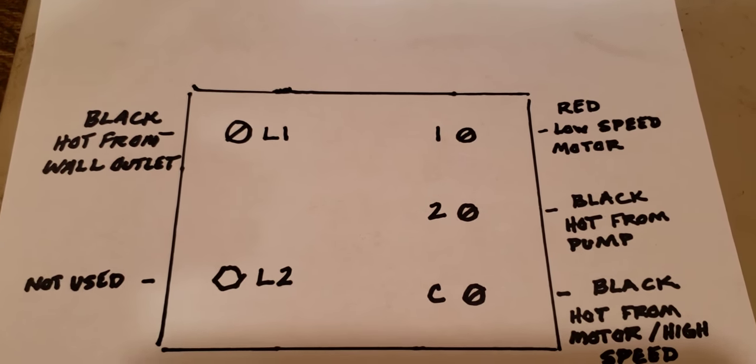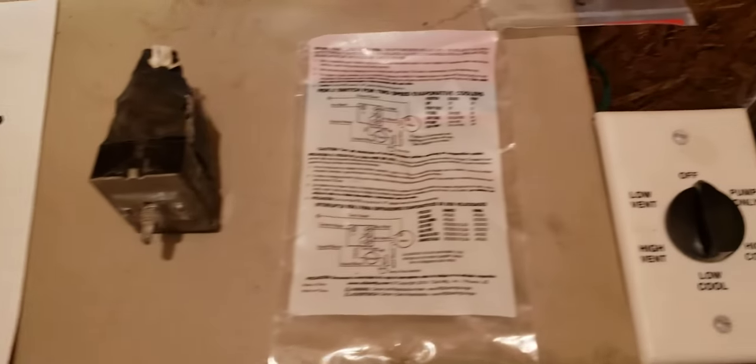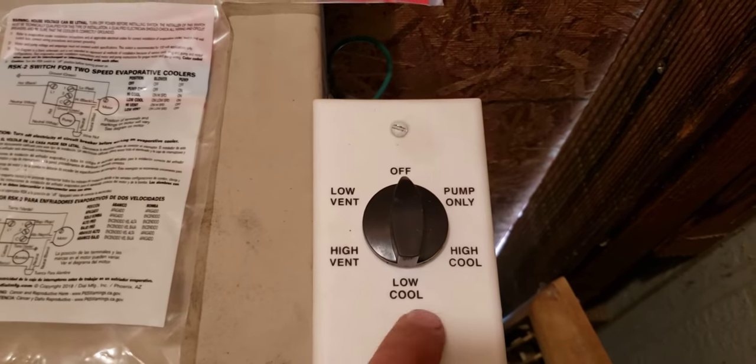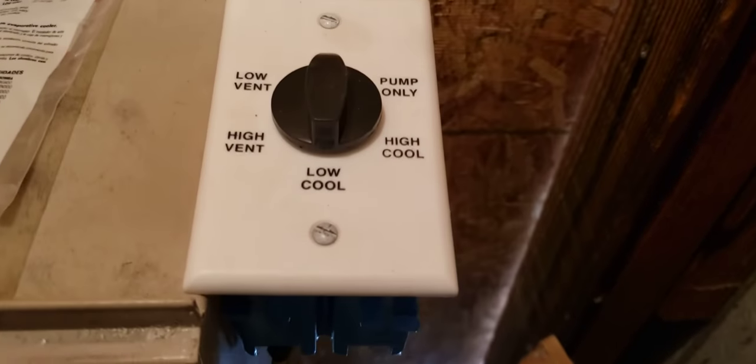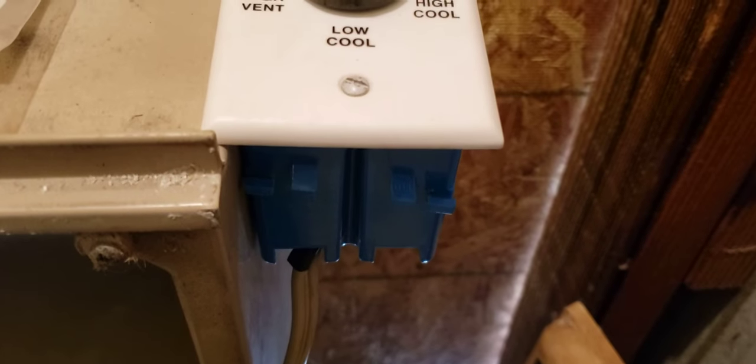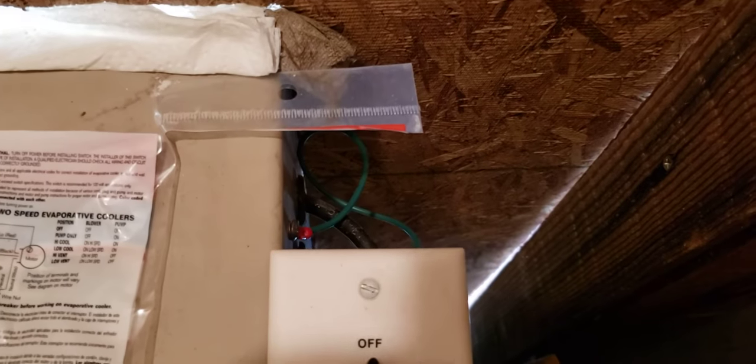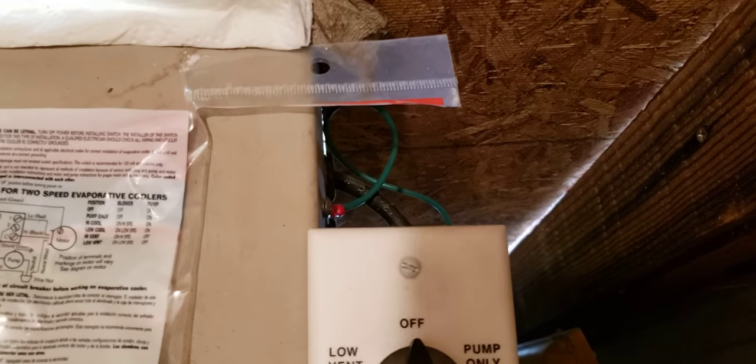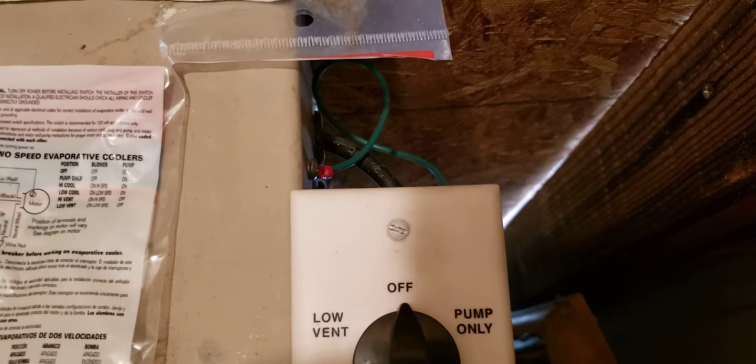What I did is wire nut all of the common wires, the white wires, inside of the box here. Just used a regular blue box outlet. I also wire nutted all the ground wires together and ran them together in one lead to the side of the motor.